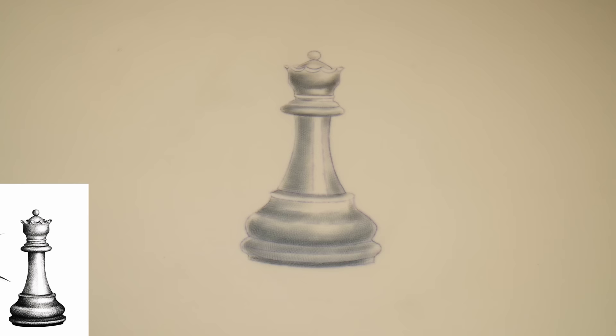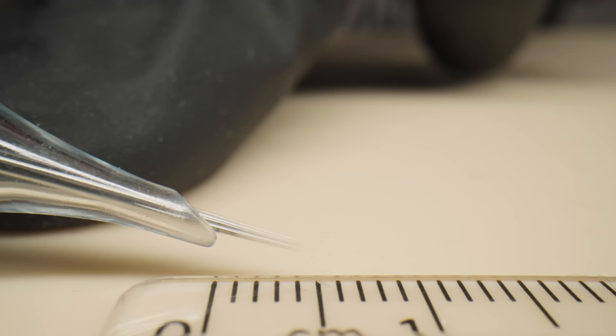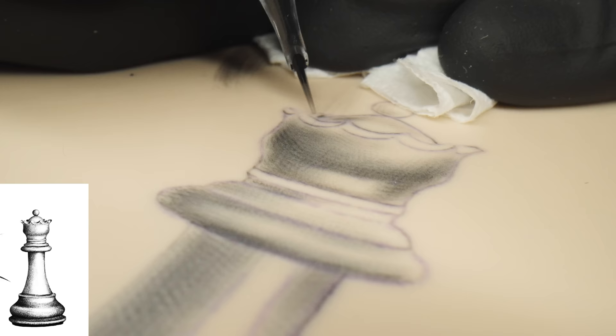So that was the first pass, and now we bring the design to life. For the next step, I'll use a seven round liner 0.3 millimeters. In this pass, I aim to complete the design.